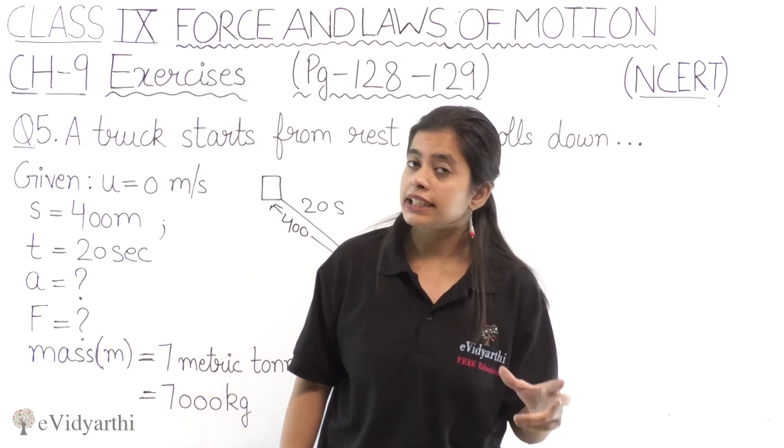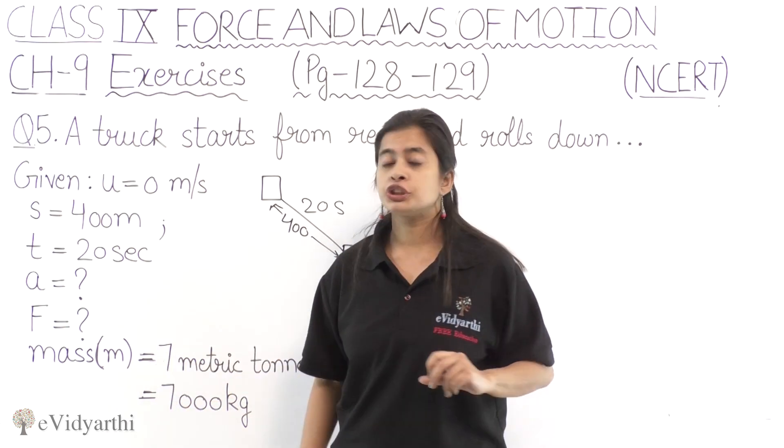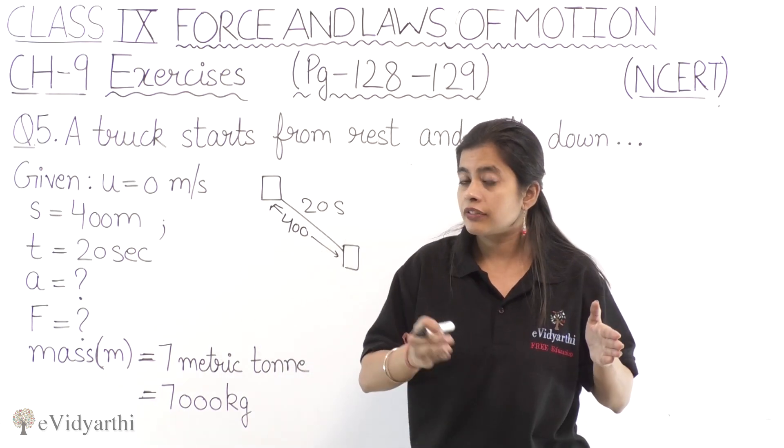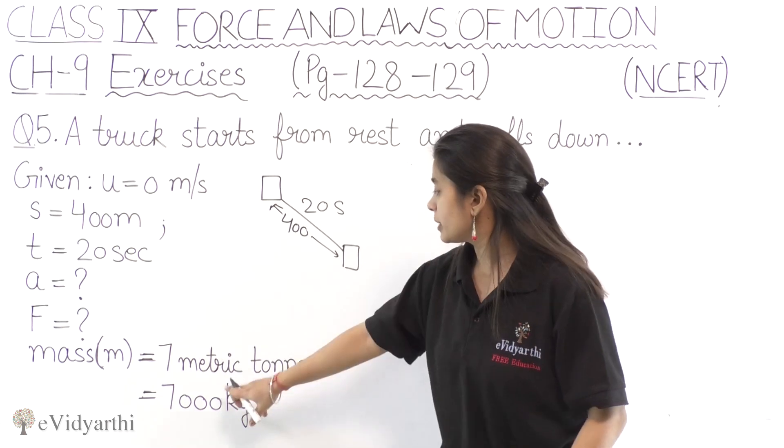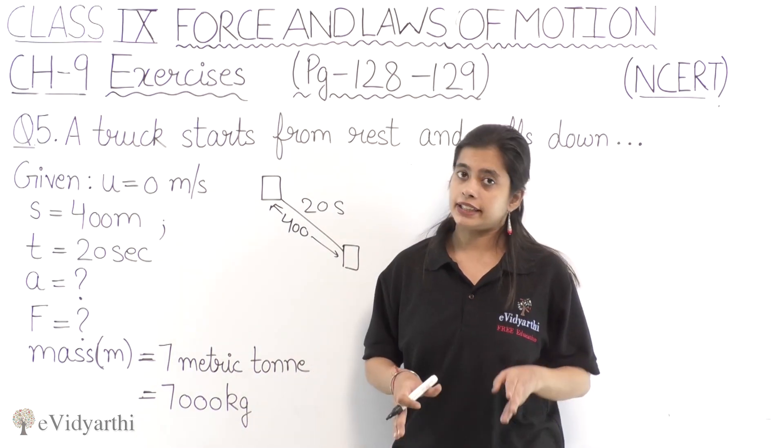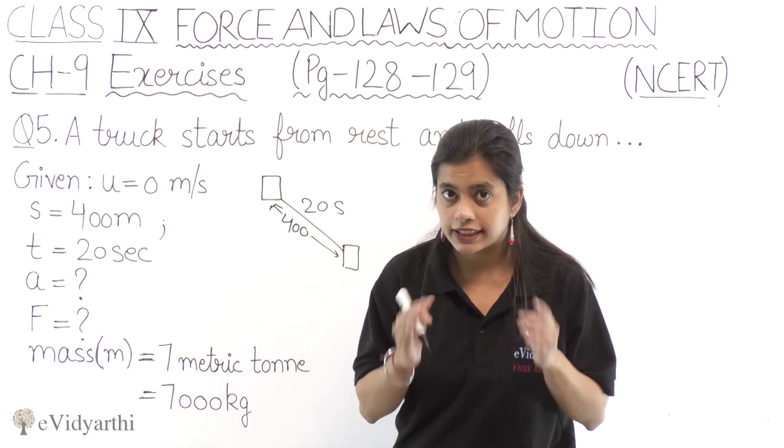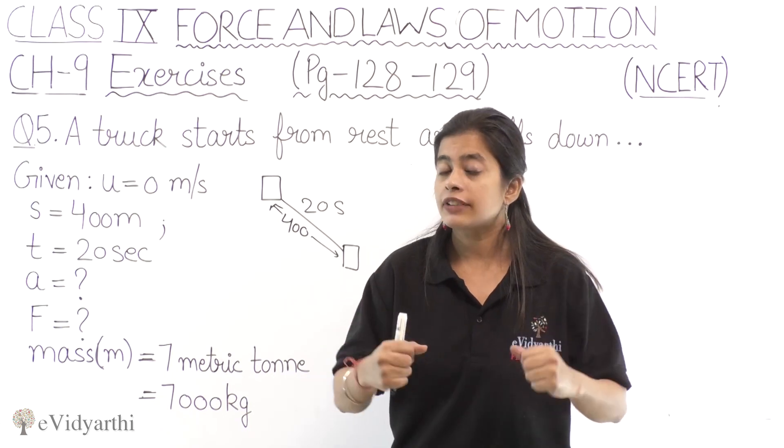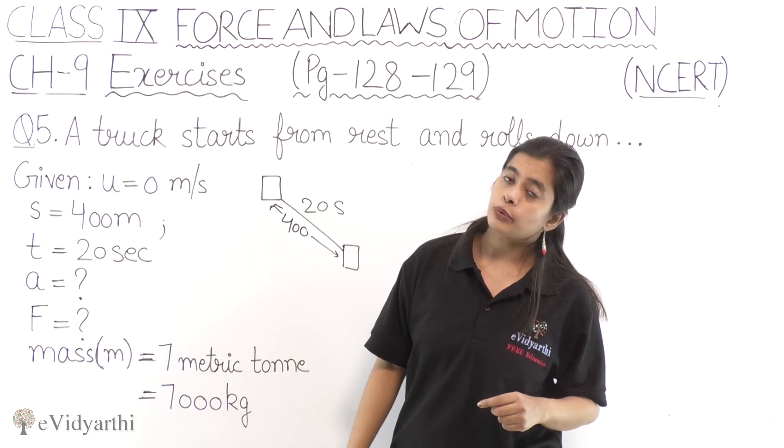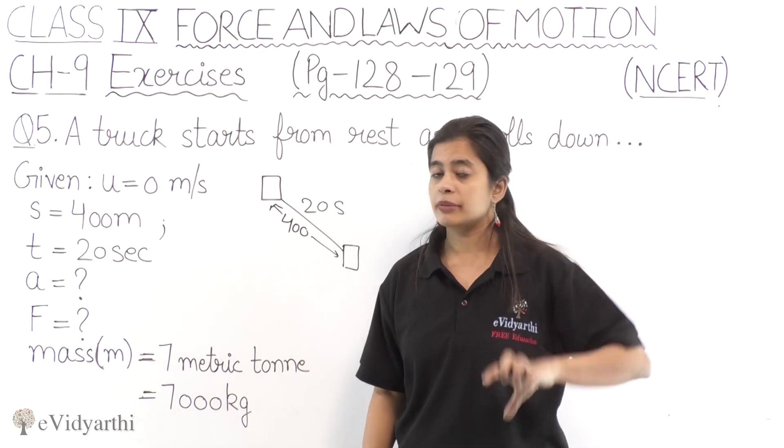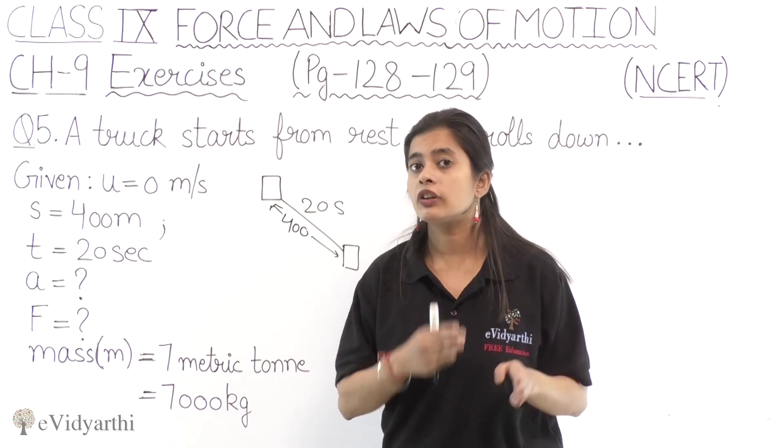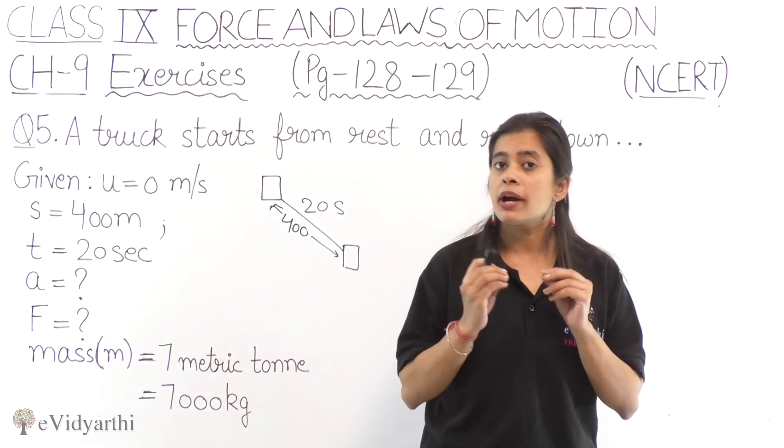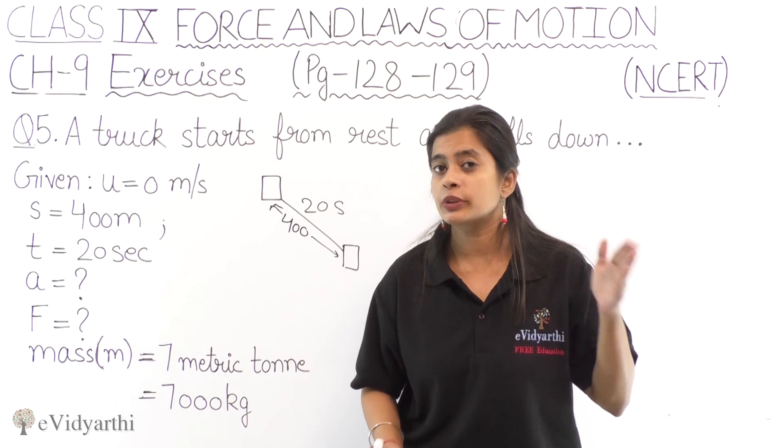And the weight is given by the truck itself. The weight is 7 metric tons. 1 metric ton equals 1000 kg, so we have 7 metric tons equals 7000 kg. So we need to find the acceleration plus the force applied.